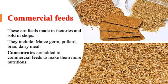After conserved feeds, we now deal with commercial feeds. These are feeds made in factories and sold in shops, and they include pollard, bran, dairy meal, and maize germ. Remember that concentrates are added to commercial feeds to make them more nutritious.